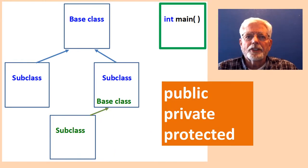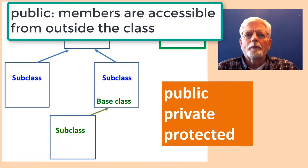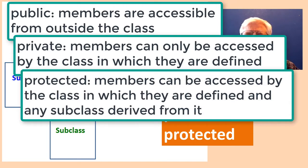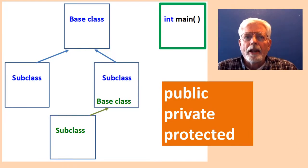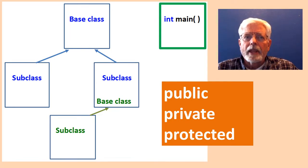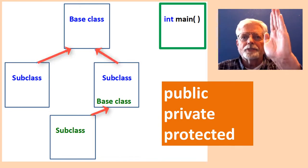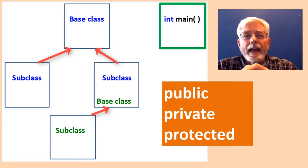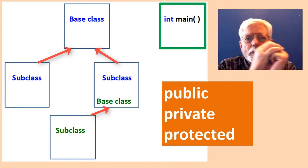In C++ there are three access specifiers. Public members are accessible from outside the class. Private members can only be accessed by the class in which they are defined. Protected members can be accessed by the class in which they are defined and any subclasses derived from it. Member data or methods with the public access specifier can be accessed by any subclass or anywhere in the program where the object is visible. Access can only go up from a derived class to its base class. Access cannot go down from a base class to one of its subclasses, and access cannot go across from one subclass to another.